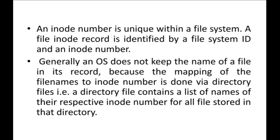A file's INODES record is identified by both the file system ID and the INODES number. For a file system there is also an ID, just as each file has an INODES number. If you have two different file systems and your file is in file system 2, you use the file system ID of file system 2 along with the INODES number to find the particular file present in that file system.